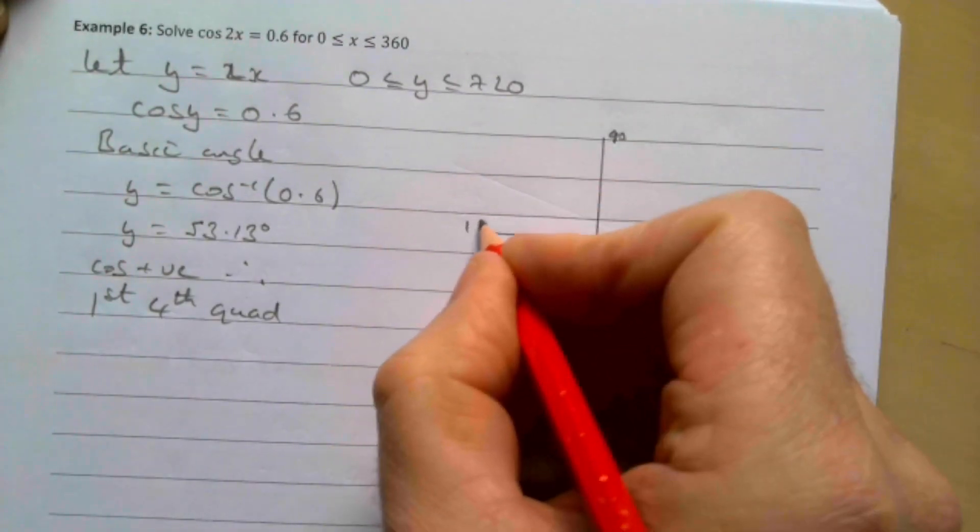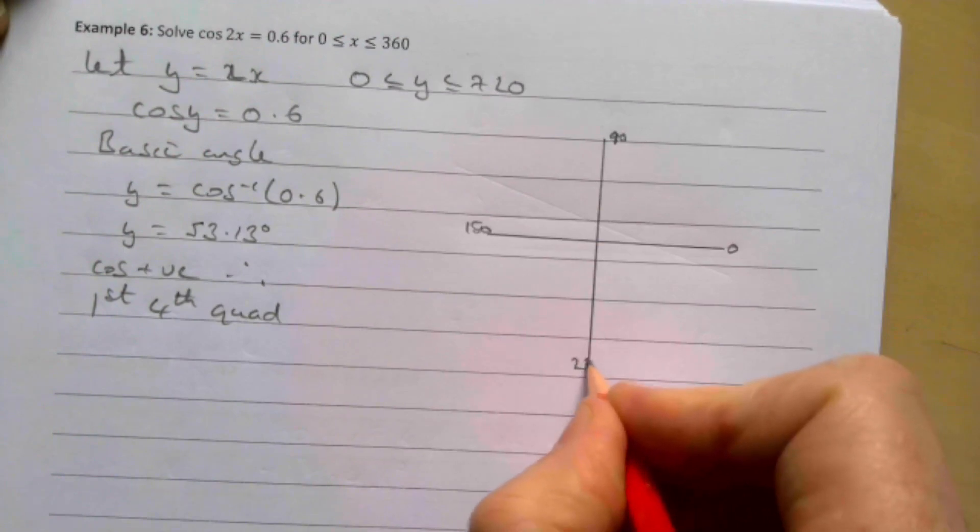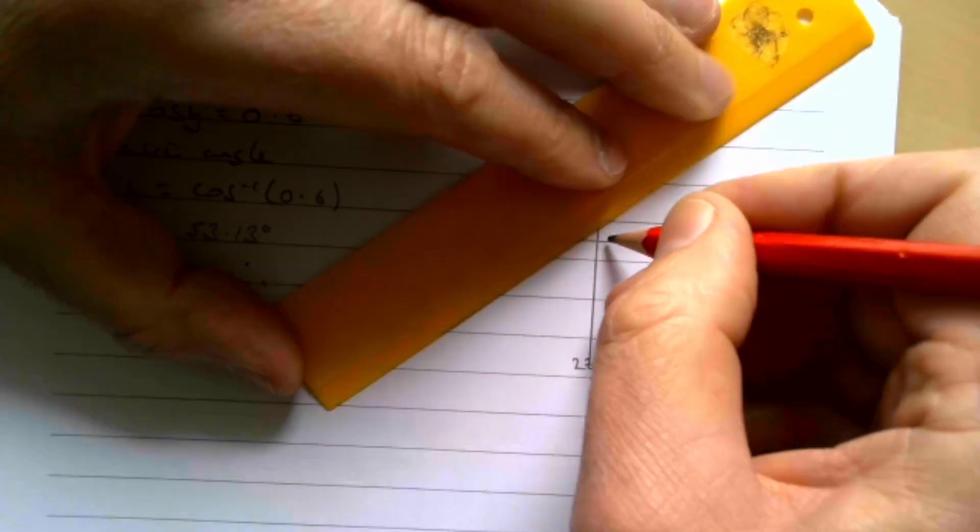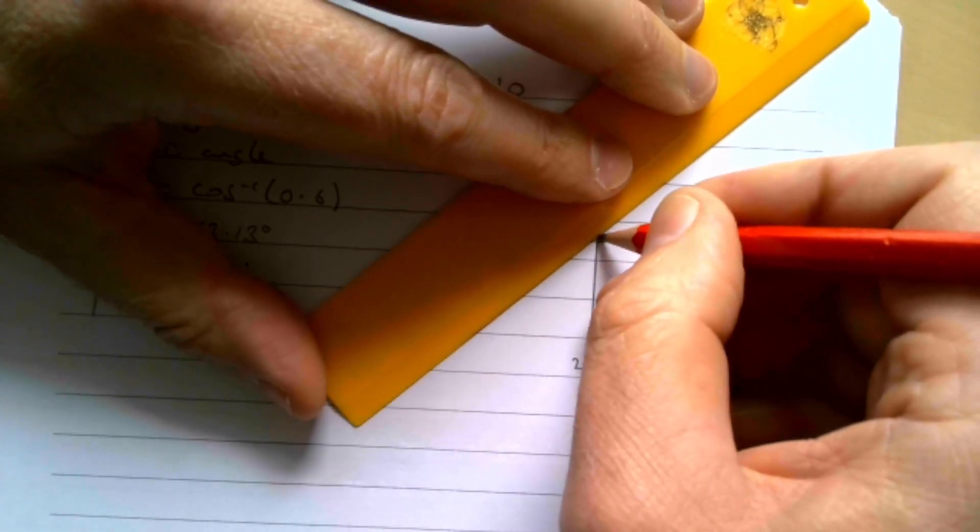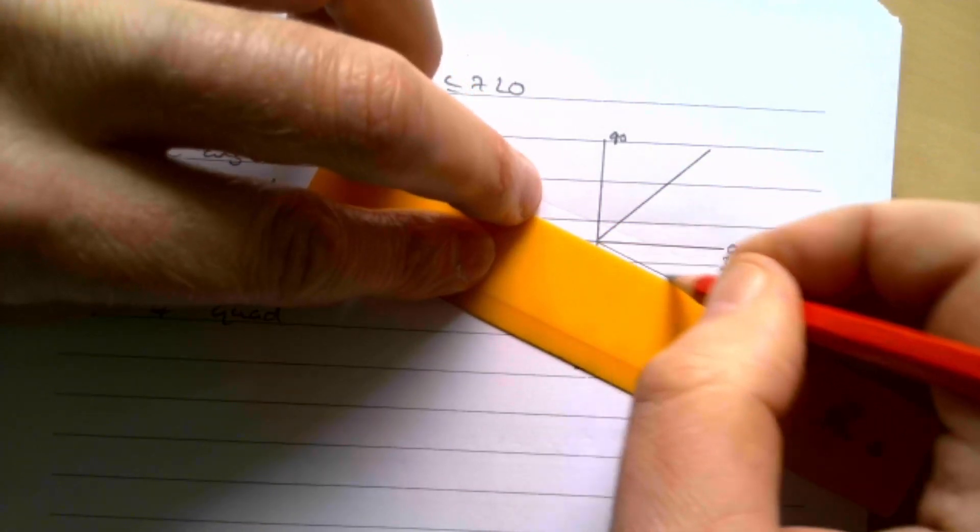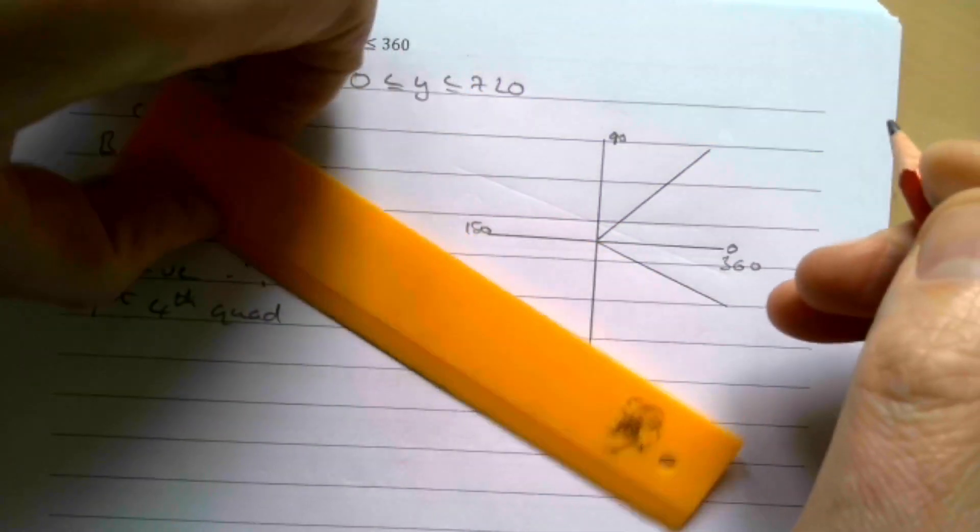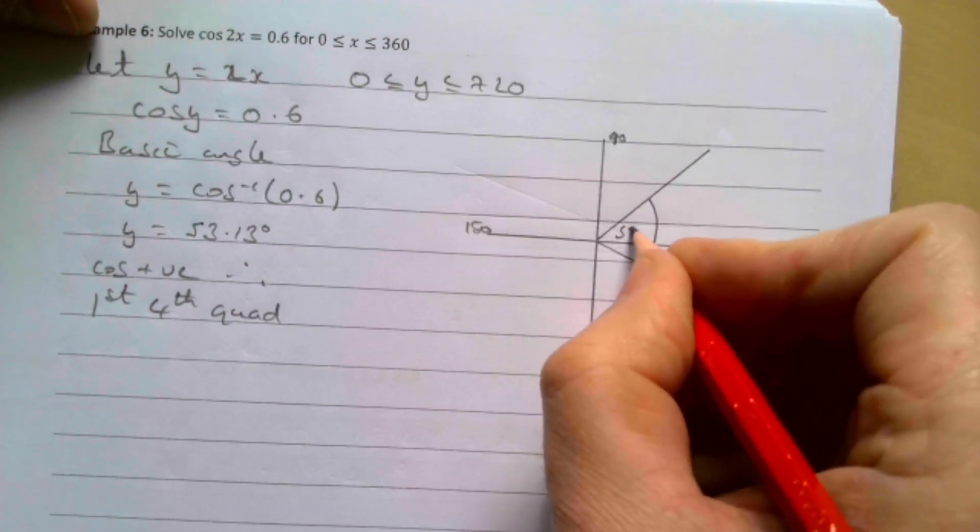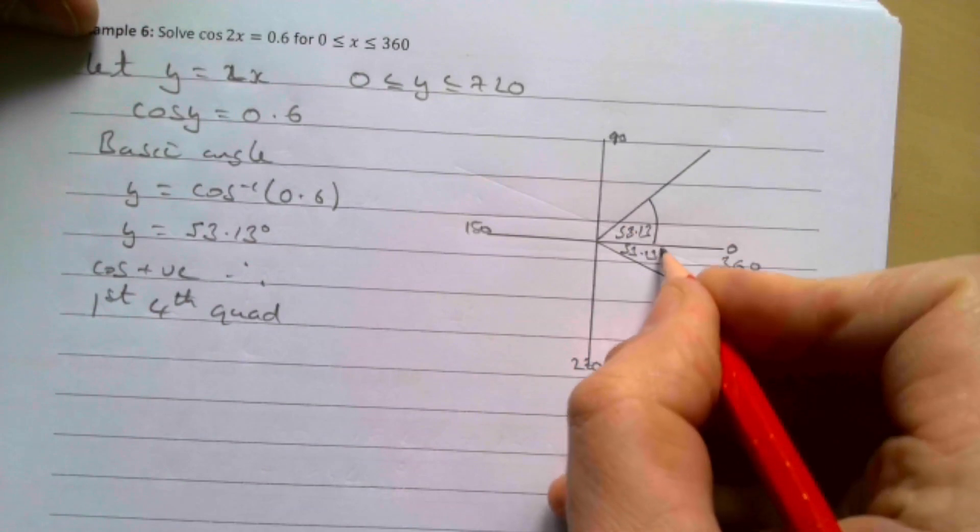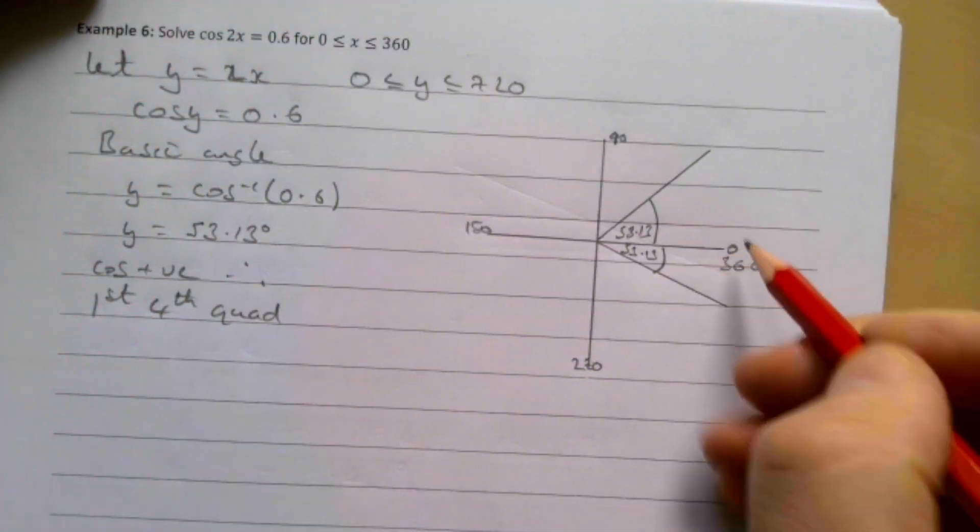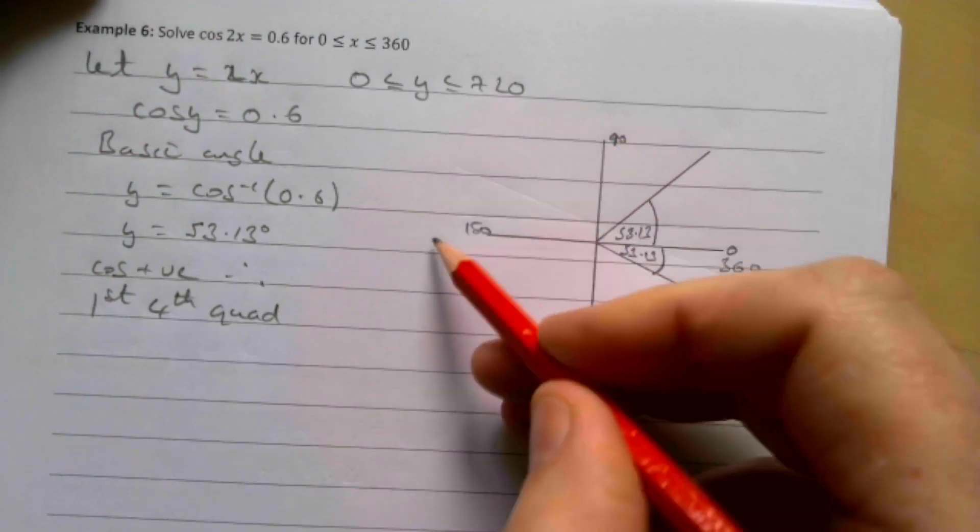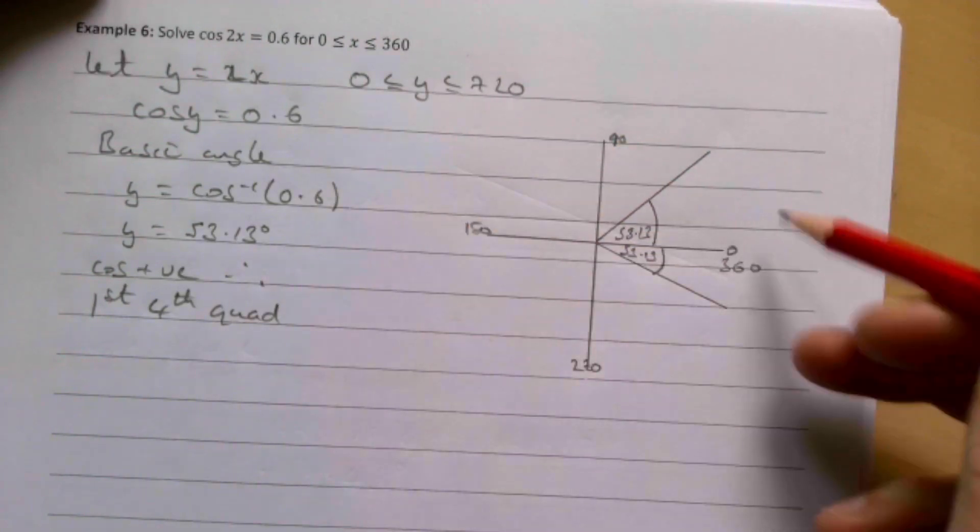0, 90, 180, 270, 360, and the two that I want here are when cos is positive, so it's going to be here and here. It's supposed to be symmetrical. And we also need to go around again, so it's then 450, 540, 630, and 720.